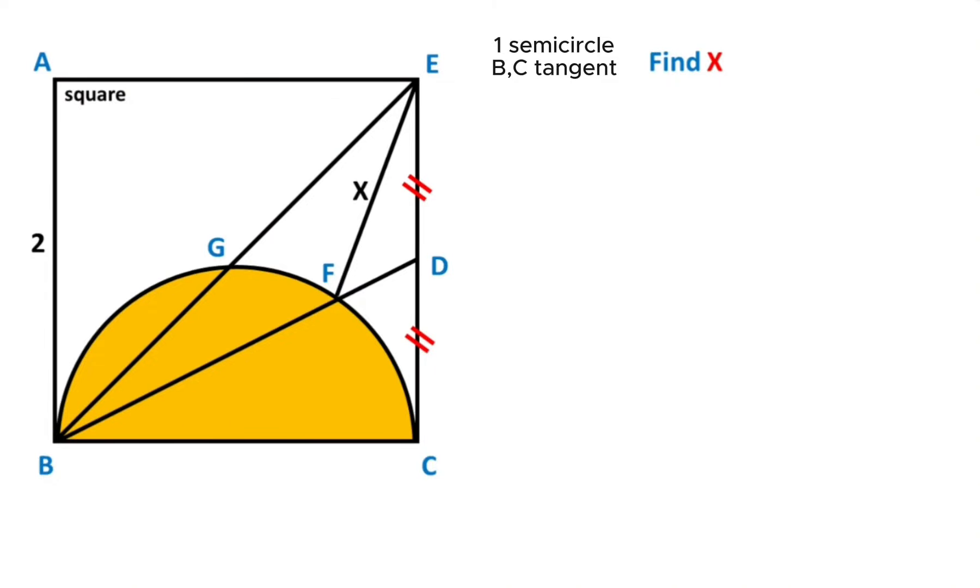Hello everyone, this will be how one square, one semicircle, and this length is given two. These two parts are given as equal. The question is, what is the length of the x?